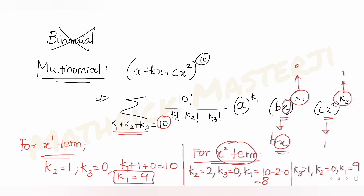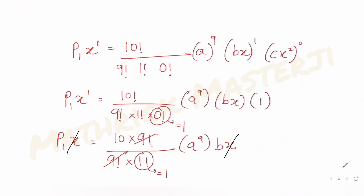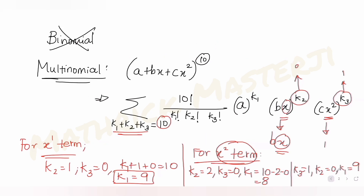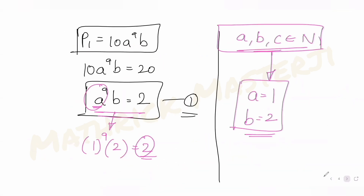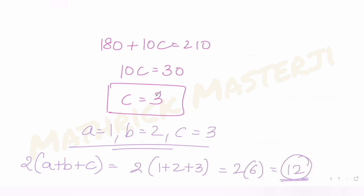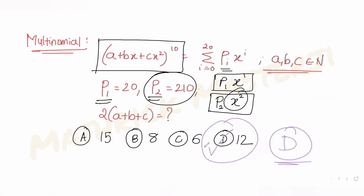For x¹, there was one case giving p1 = 10a⁹b, from which we got a = 1 and b = 2. For x², there were two cases; solving both gave p2 = 45a⁸b² + 10a⁹c. Substituting a=1, b=2 and equating to 210 gave c = 3. We then evaluated the required expression to get the answer.